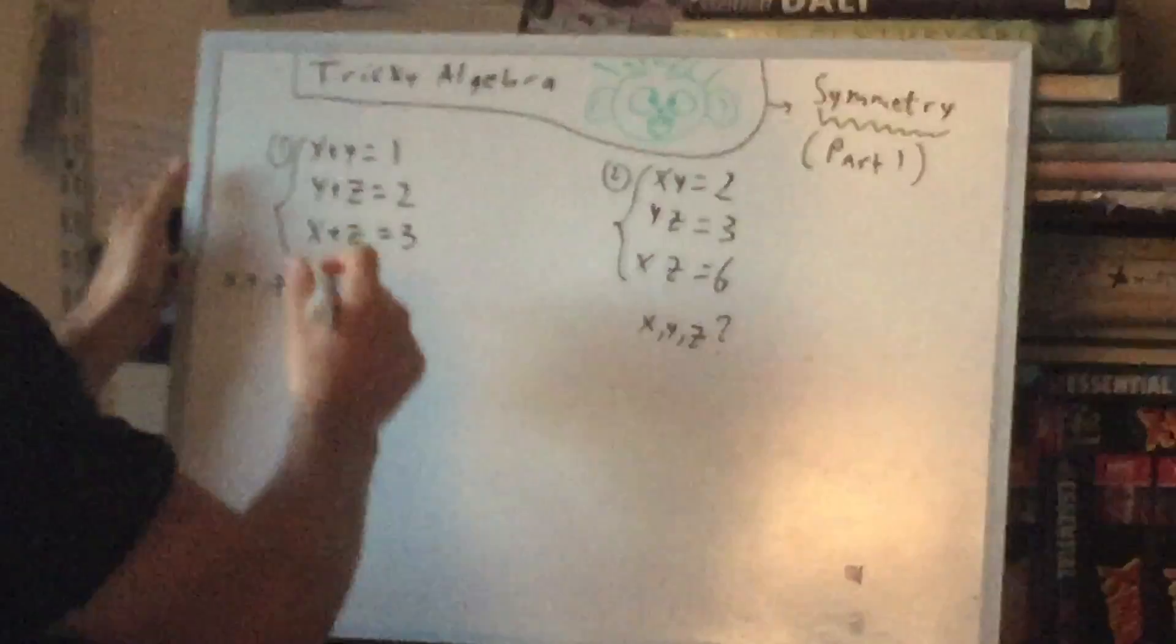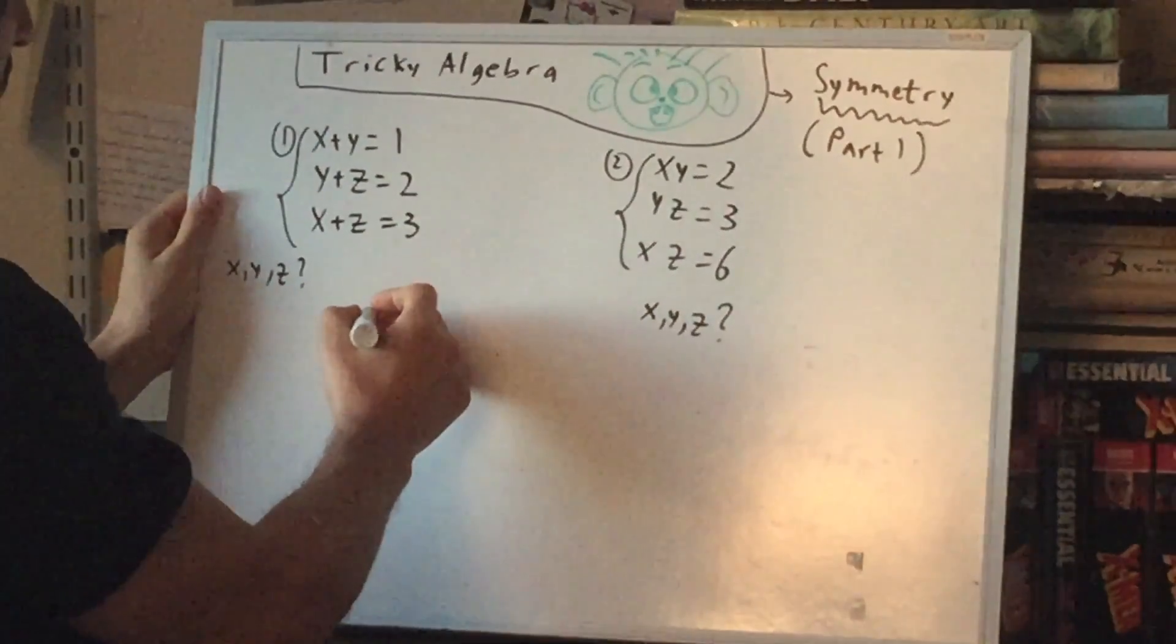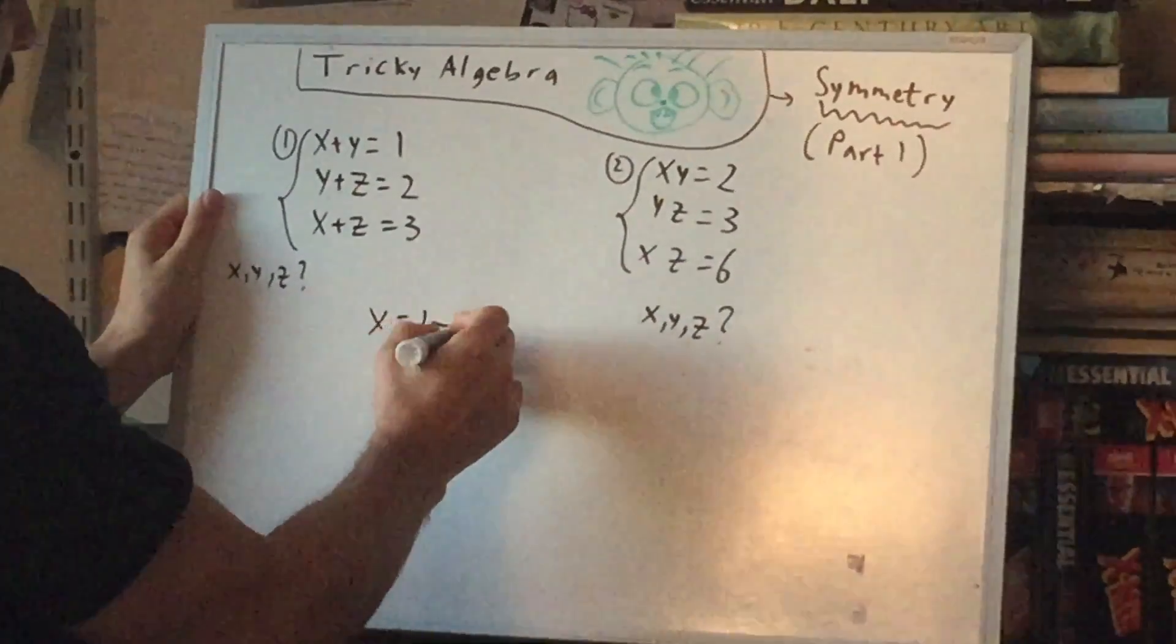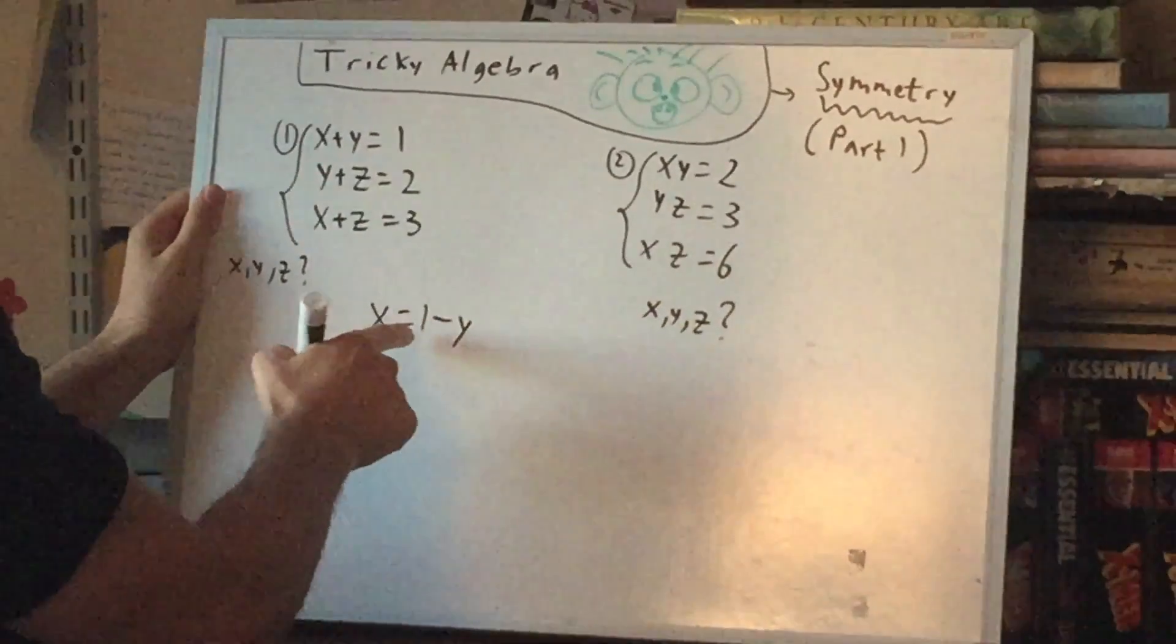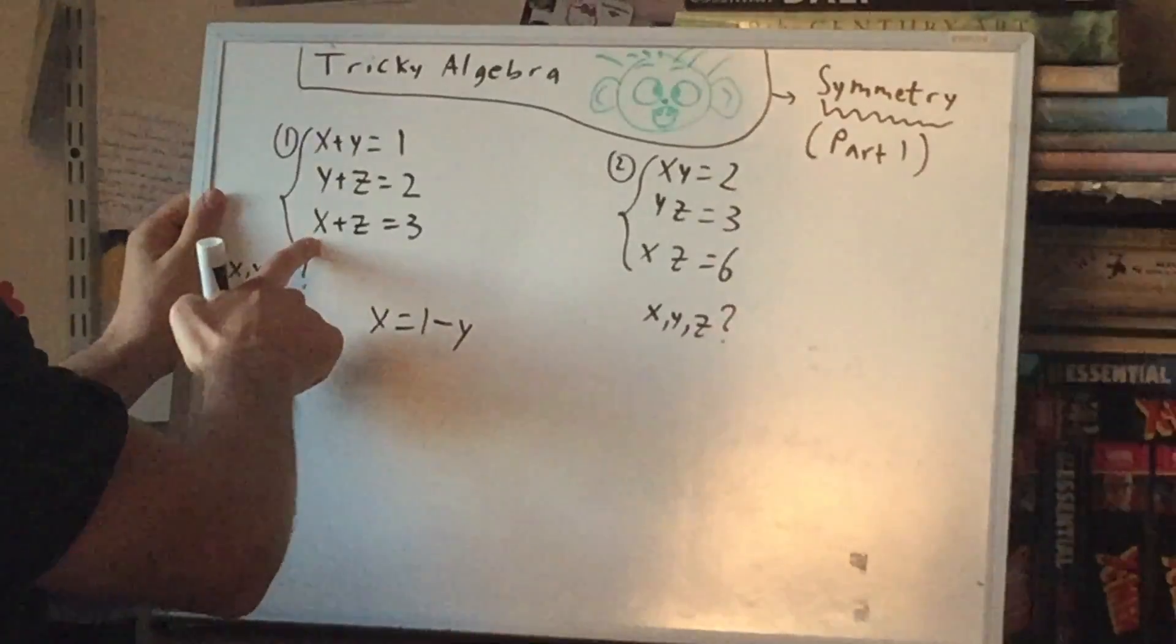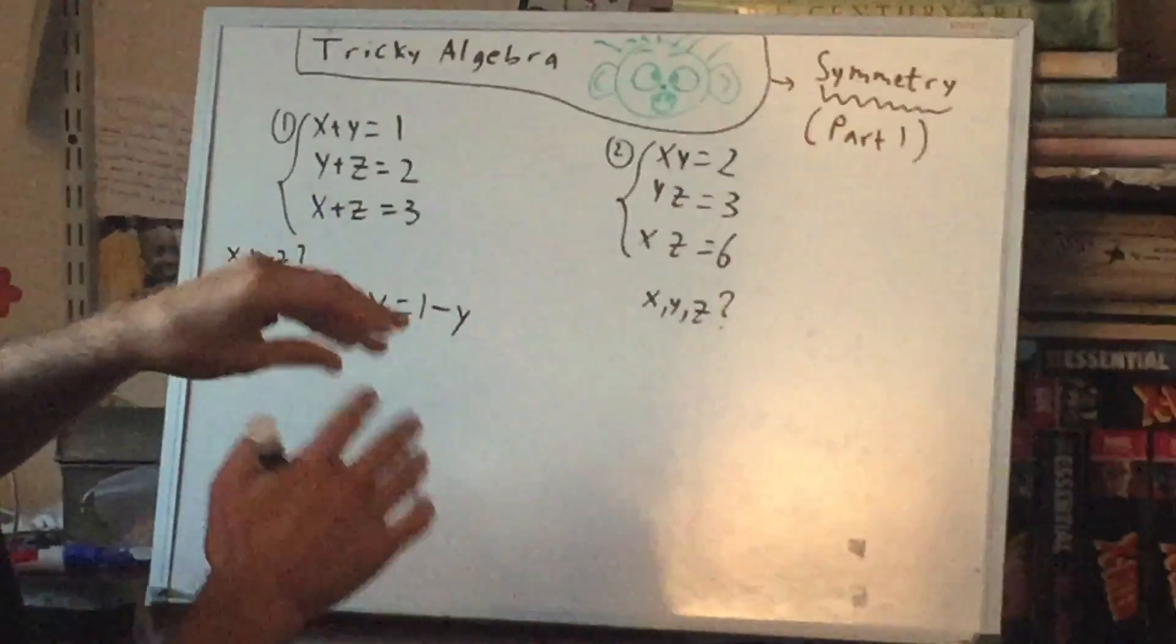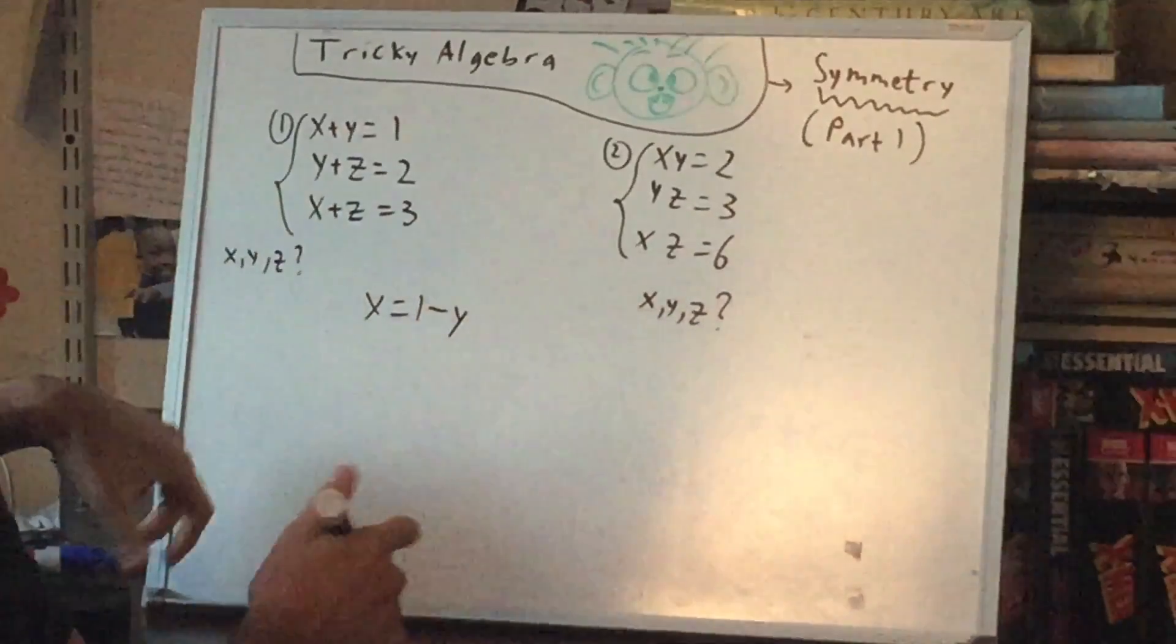So we could take this and substitute, let's say, for x. We can move the y over, and then use this and plug that in over here. And then we can keep substituting things in, and that will eventually work, but it's not very nice.